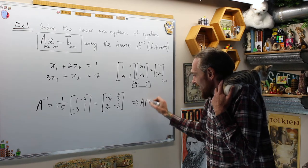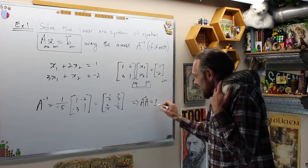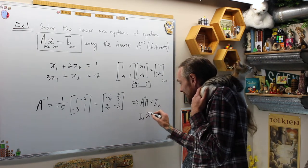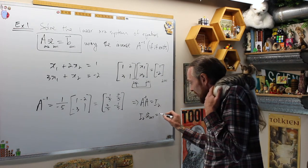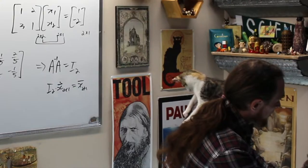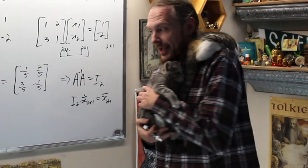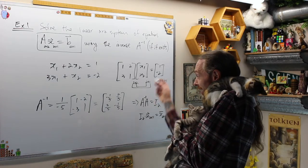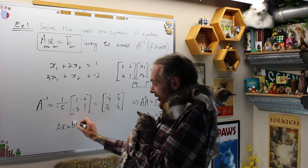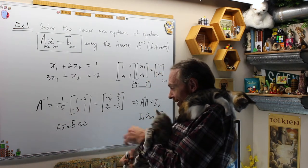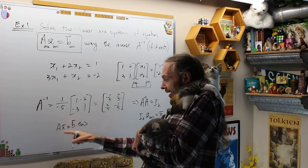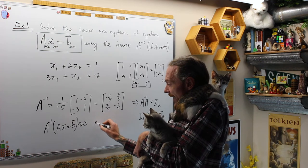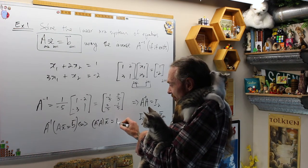What this says is A times A inverse is the identity matrix. That's what we know. And we know that I2 times x, a 2 by 1 matrix, is going to be that 2 by 1 matrix left alone. Using this algebra, I'm going to algebraically solve this equation now. I have Ax equals b. And then we're gonna multiply both sides by A inverse.